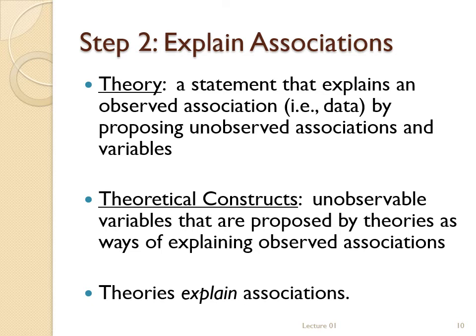In this course, the primary observed relationship will be that ancestors and descendants have different traits from one another. The theoretical constructs that explain that relationship include things like evolution and natural selection. You observe the traits of ancestors and descendants and explain those traits with natural selection, but natural selection itself is an abstract concept that you cannot see or feel or weigh.